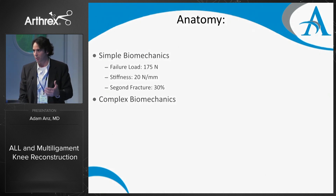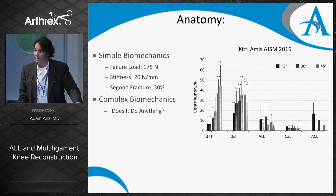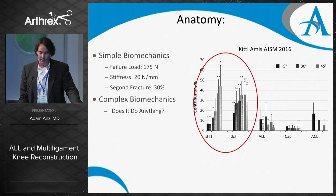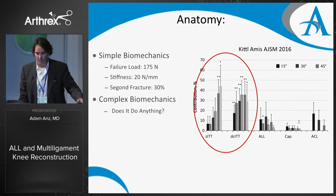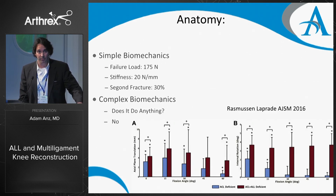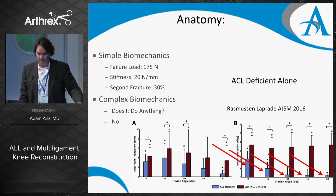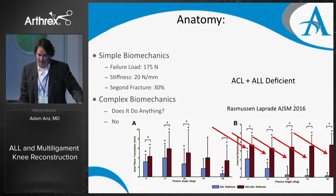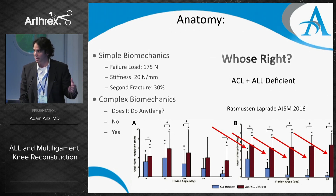Complex biomechanics is where we get a better understanding of what's going on anterolaterally — does it really do anything? A 2016 AJSM study looked at the complex biomechanics of the whole lateral complex. Kittle and his group determined that elements of the IT band were more important for anterolateral stability than the ALL itself — they said the ALL does not do anything. LaPrade and his group later studied it with the Veil robot and found a much greater contribution of the ALL, concluding yes.